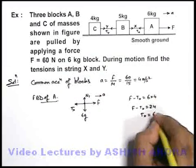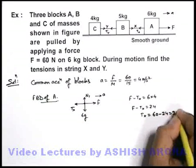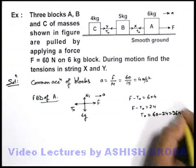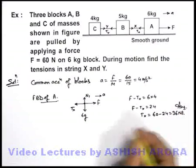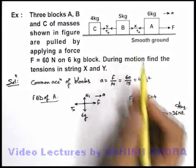and here F is equal to 60, so it is 60 minus 24 is equal to 36 newton. This is the answer to a part of question, that is the tension in string X.